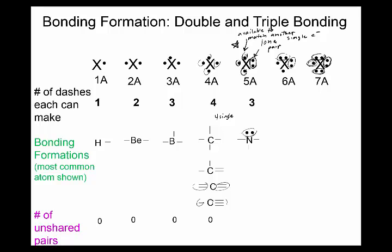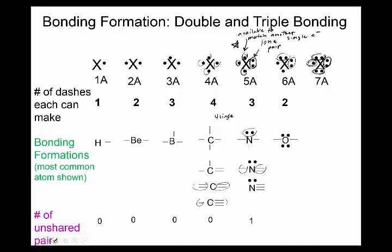When we get to 5a, nitrogen will have one unshared pair. It doesn't matter where you put the bond — the position is arbitrary, since molecules are 3D. Nitrogen can make three singles, or a double and a single, or a triple bond. 6a will have two dashes — most commonly two singles or one double. The halogens have one dash and three unshared pairs.